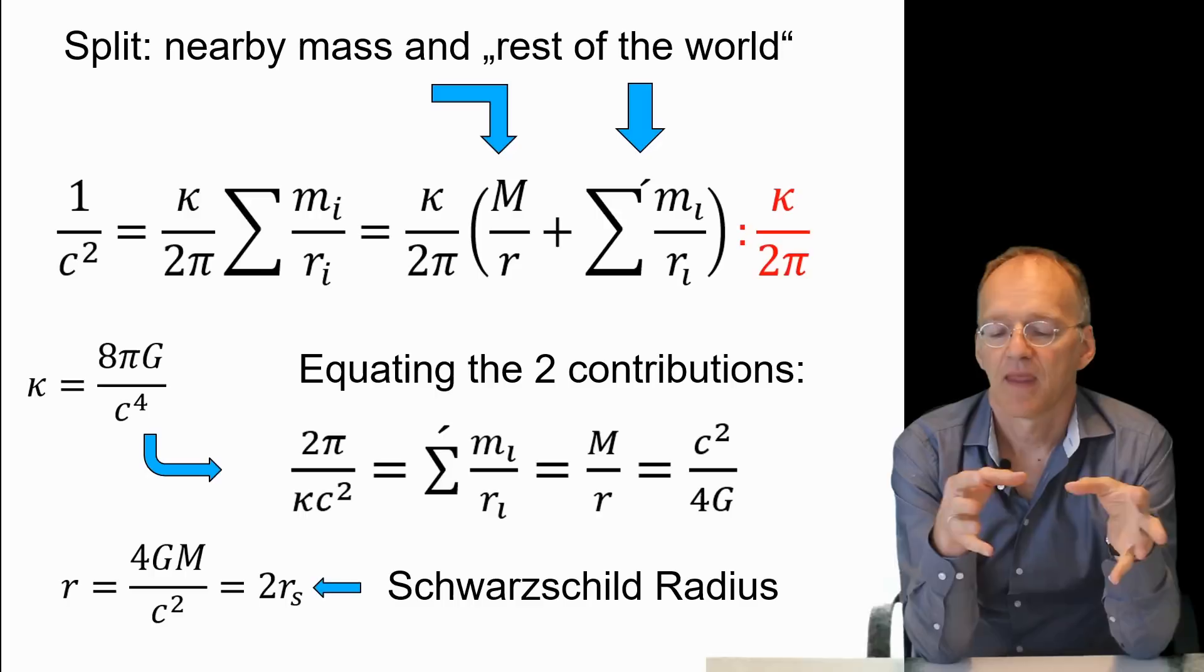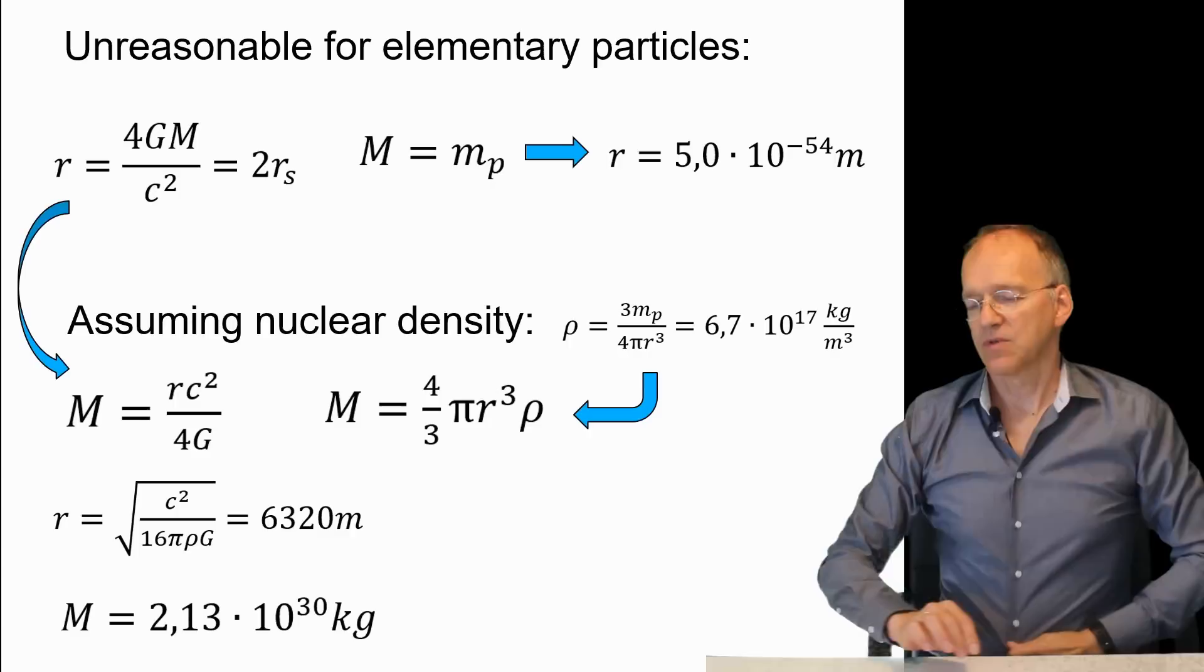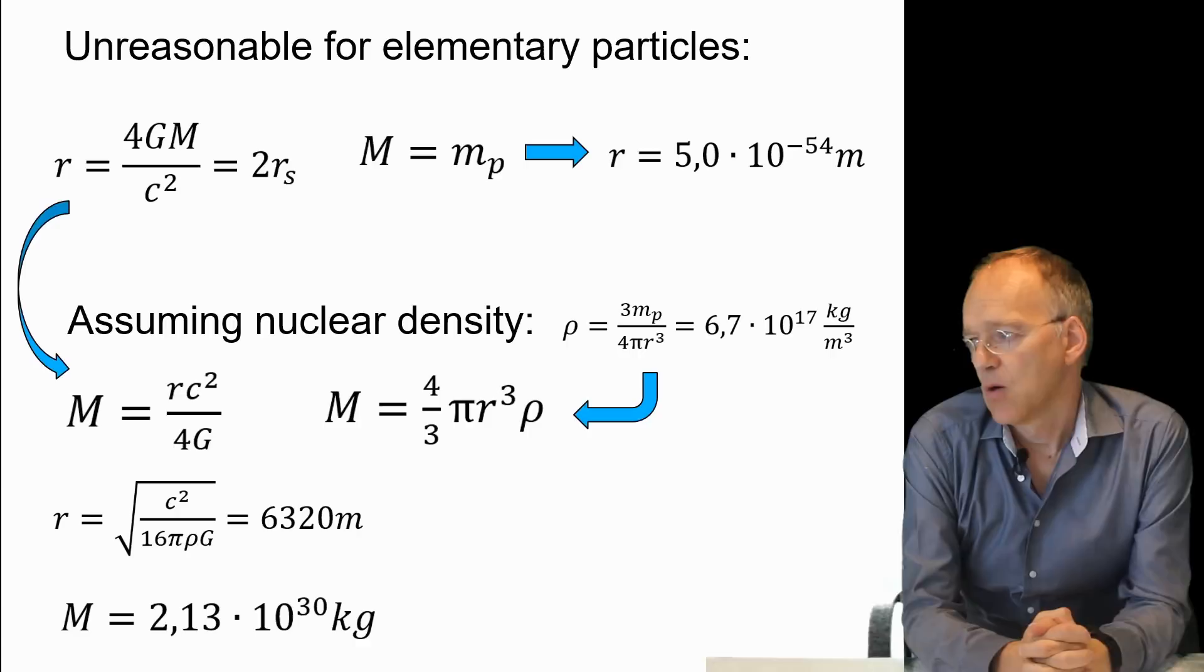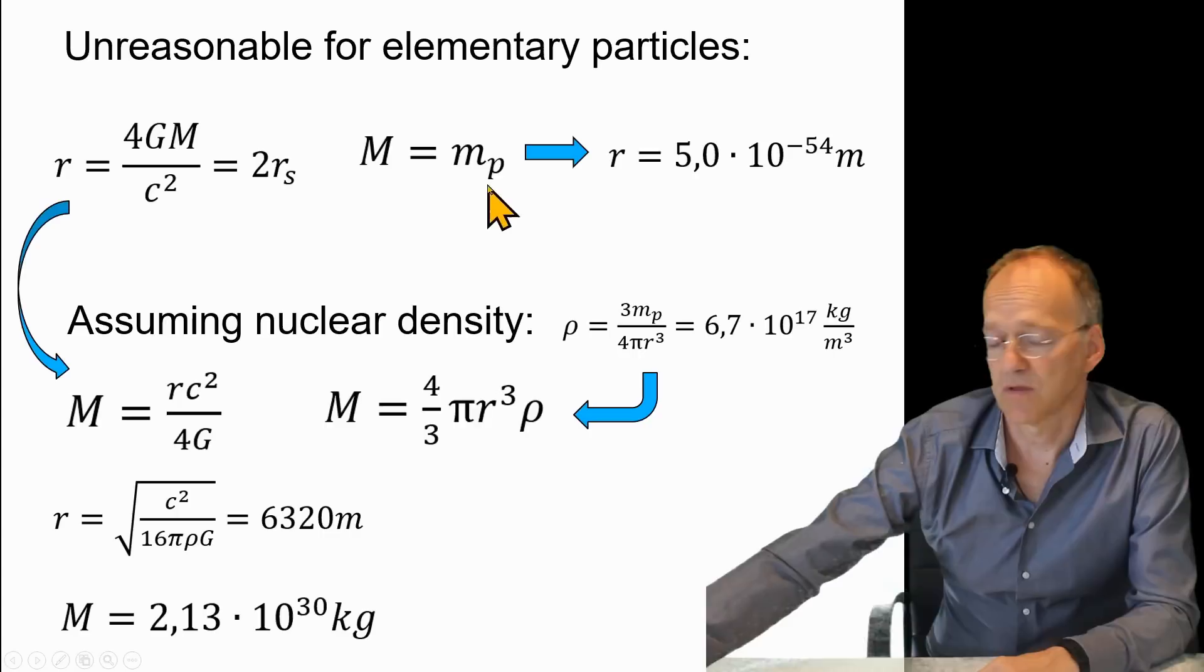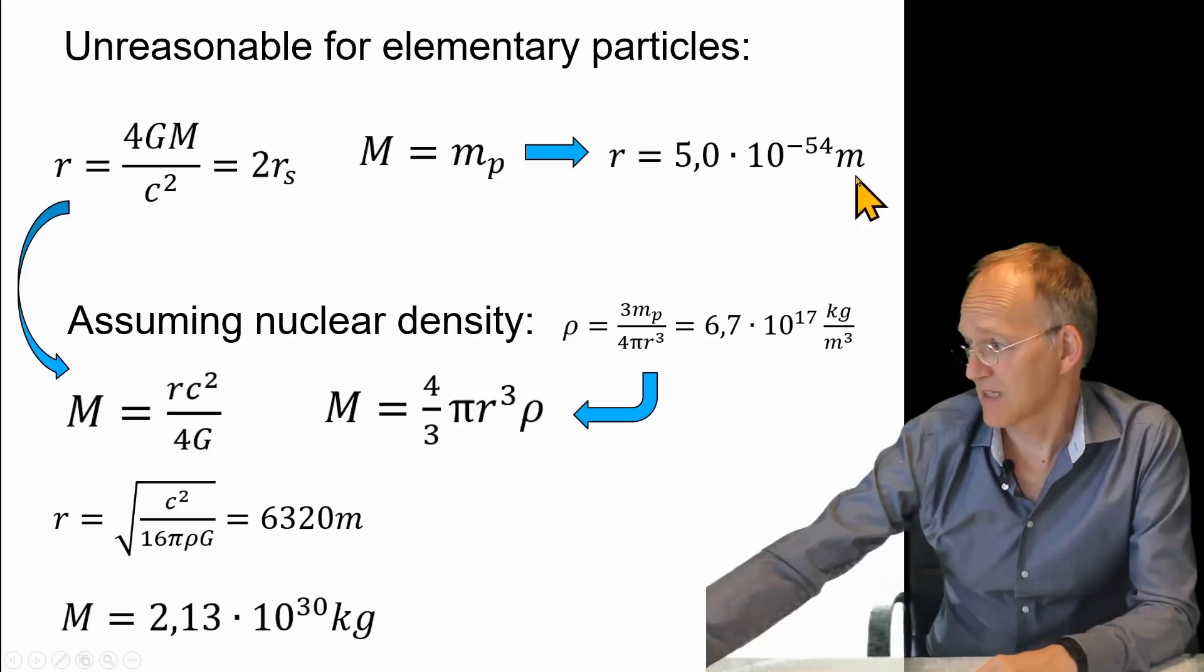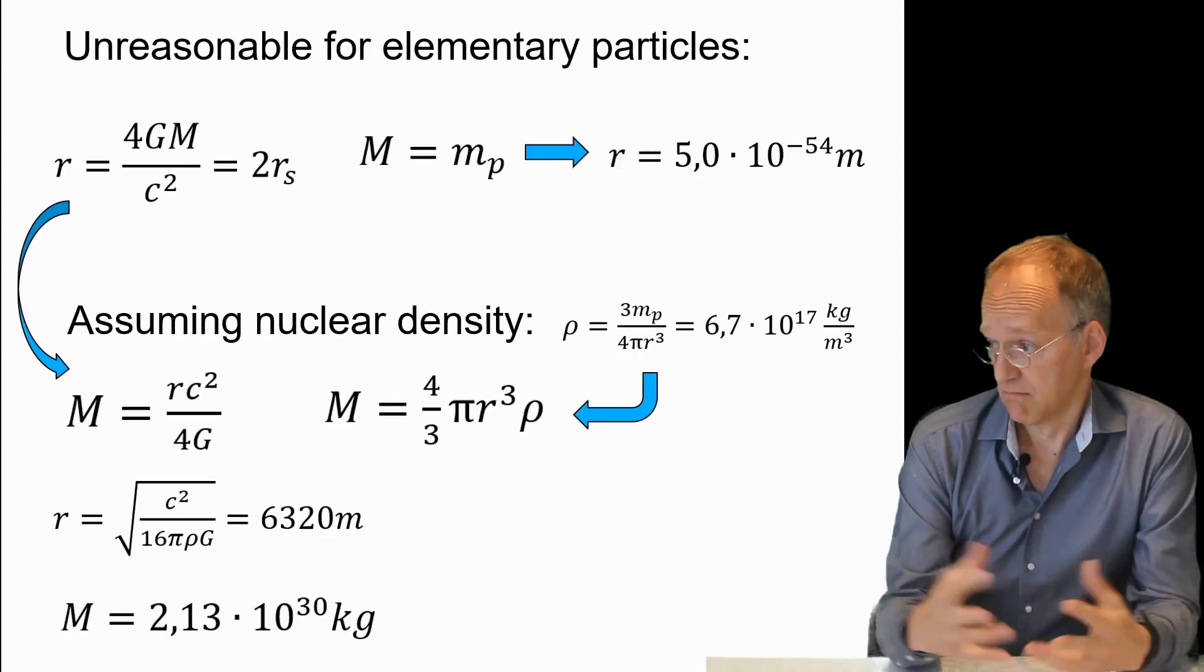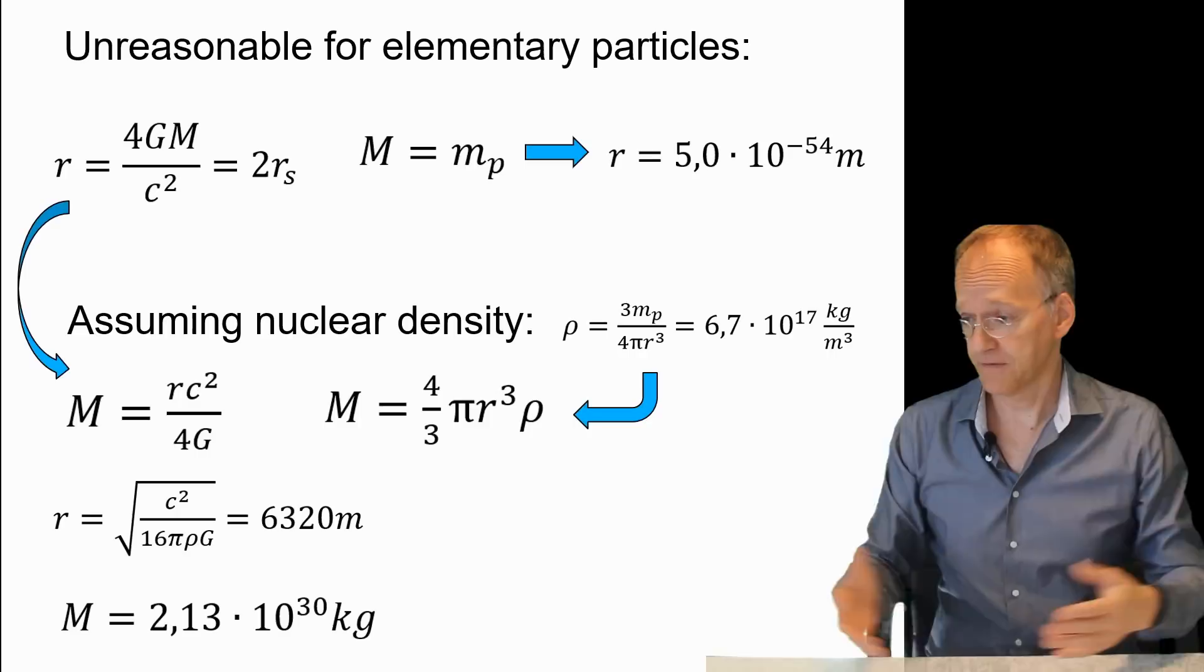Why is this not reasonable if you think about elementary particles? If we put in the mass of the proton, 10 to the minus 27 kilograms, you arrive at an absolutely tiny scale of 10 to the minus 54 meters. That's 40 orders of magnitude away from any experiment, because the real proton is 10 to the minus 15 meters. This is certainly not reasonable.